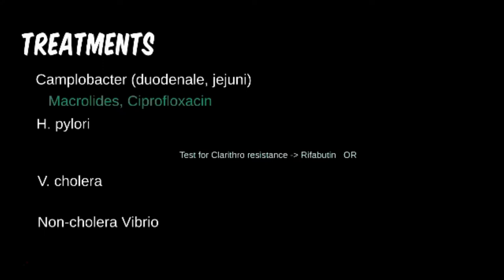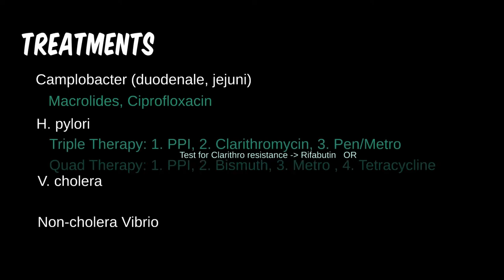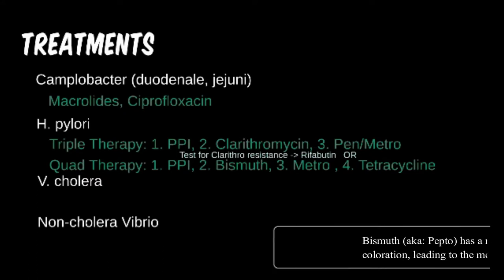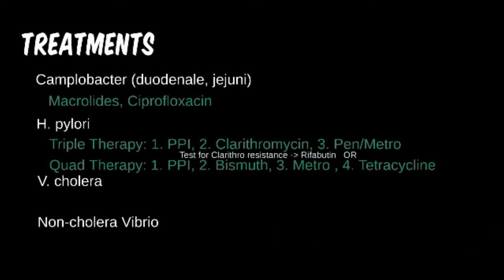H. pylori treatment is a common test question. There is still no gold standard for treatment, but most physicians use either the triple or quad therapy. Both include a proton pump inhibitor to reduce stomach acid and each also require two different forms of antibiotics to kill the microbe itself. Quad therapy also uses bismuth, which acts to coat the stomach lining.